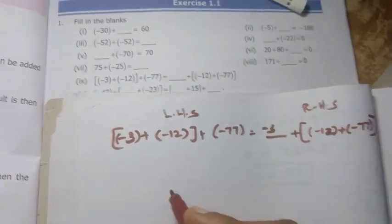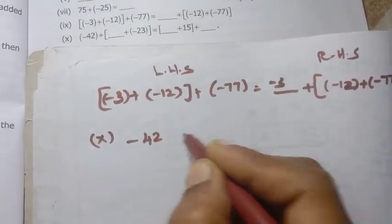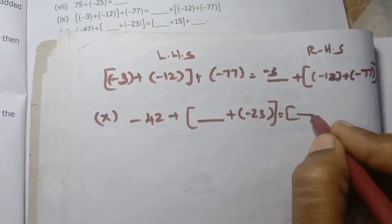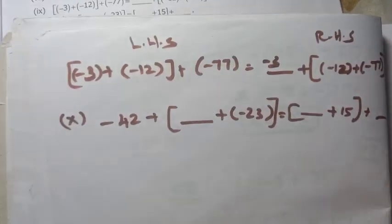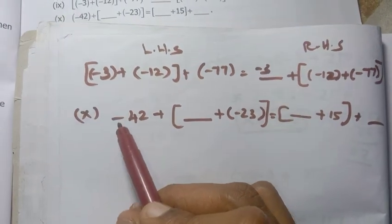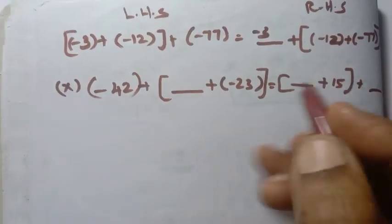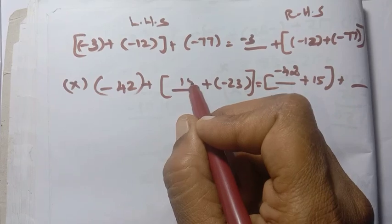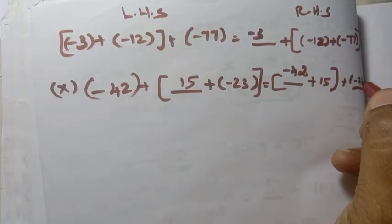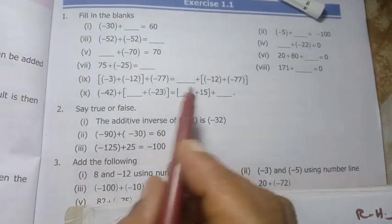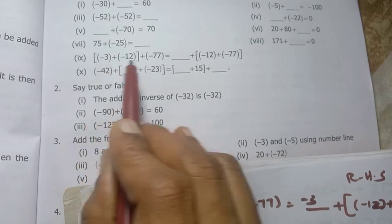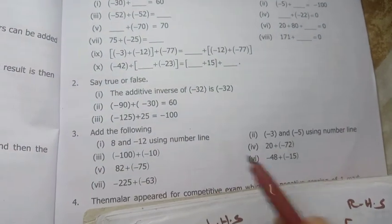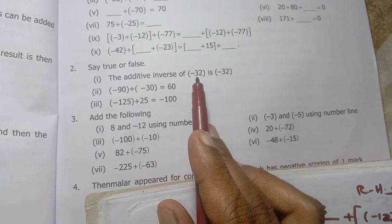The 10th sum: minus 42 plus dash equals minus 23, and minus 23 equals 15 plus dash. We need to find both missing values. First dash: minus 42. Second dash: 15. So minus 42 plus 15 equals minus 23. This completes the fill-in-the-blanks.